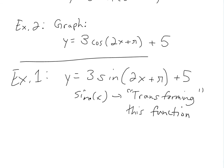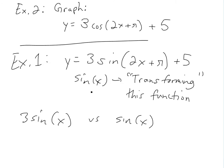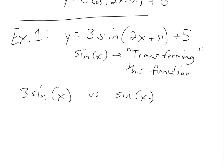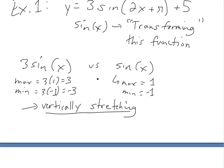Let's take this step by step. We'll compare every single factor. Looking at this 3 sine of x first — ignoring all the other factors — and comparing with the original sine: the maximum of sine is 1 and the minimum is negative 1. With the factor of 3, the max becomes 3 times 1, which equals 3, and the minimum is negative 3. So all we're doing here is vertically stretching it by this factor of 3.